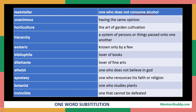Then 'unanimous' means having the same opinion. For example, if there are 10 members in a group and everybody is suggesting person A to be the leader, then person A would be the unanimous leader of the group because everybody has the same opinion. Then we have 'horticulture', which refers to the art of garden cultivation. Then 'hierarchy' means a system of persons or things passed on to one another.